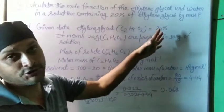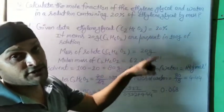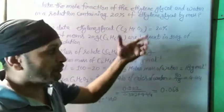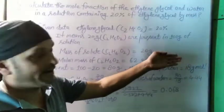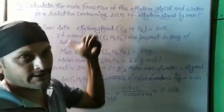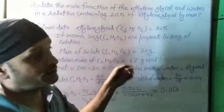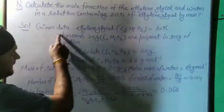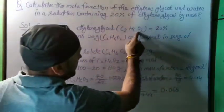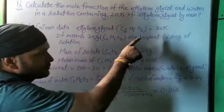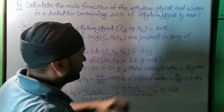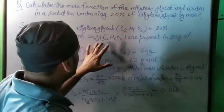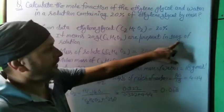So 20 grams will be the solute and 80 grams will be the solvent (water). The substance with lesser quantity is the solute, and the one with greater quantity is the solvent. From the given data, ethylene glycol (C₂H₆O₂) is 20% — that means 20 grams present in 100 grams of solution. The molar mass of ethylene glycol is 62 g/mol.